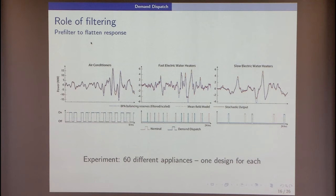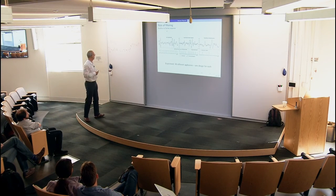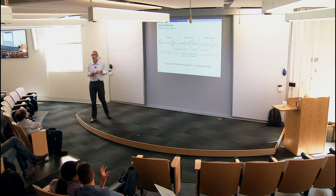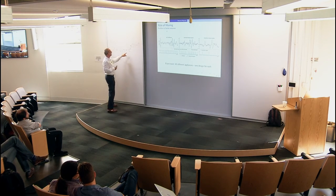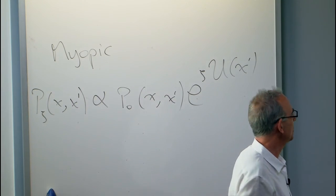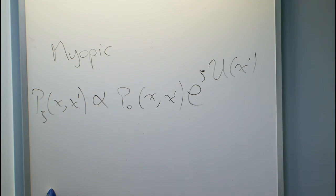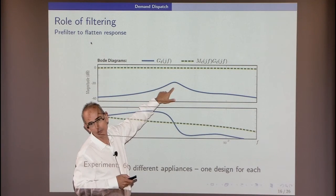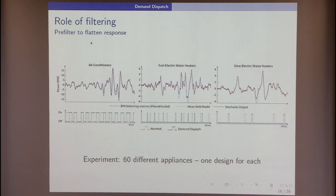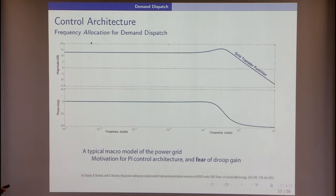If you compare what a typical fridge does with what happened after this procedure, you can't tell the difference — nobody would know their refrigerator is being tampered with. Put them all together and you get beautiful tracking. With 50% of capacity for water heaters, tracking is perfect and we see very little change from nominal behavior. One design per brand, given its nominal behavior. Robustness to model mismatch — if we're off by a tiny bit — doesn't seem to matter much.